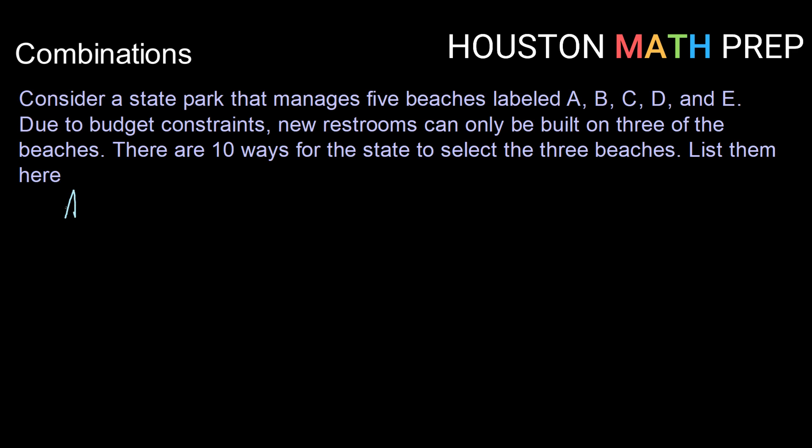So of course we can start with A, B, C. So that would mean that beaches A, B, and C get bathrooms and D and E do not.